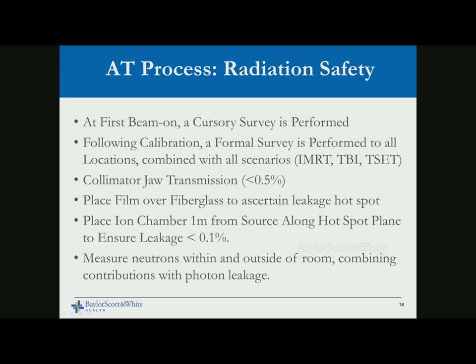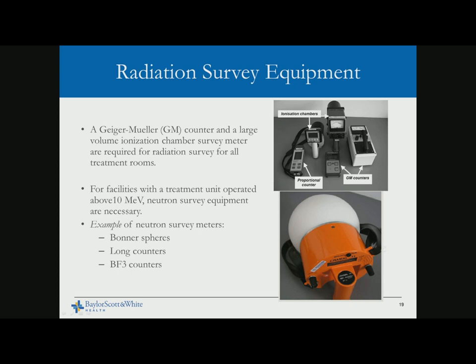Equipment needed for radiation survey includes a Geiger-Müller counter and a large volume ion chamber. The GM counter helps identify cracks in shielding or unintended holes. The large volume ion chamber allows you to determine instantaneous dose rate — whether your occupational or public limits are met depending on whether the area is controlled or uncontrolled. For energies greater than 10 MeV, neutron detection using boron trifluoride counters or bubble counters should be used to quantify neutron contribution.